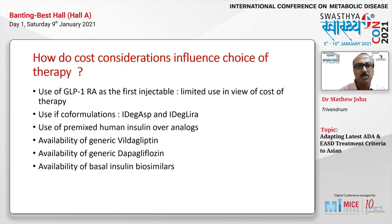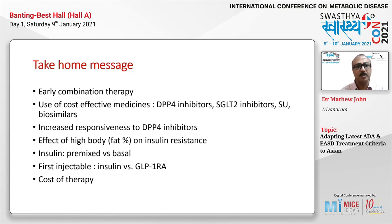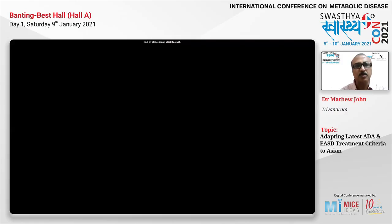Certain insulin formulations like iDegAsp and iDegLira are expensive, and GLP-1 RAs are expensive, but availability of biosimilar premixed insulins and generic vildagliptin and dapagliflozin makes therapy more affordable. Key messages: consider early combination therapy; use cost-effective medicines — DPP-4 inhibitors, SGLT2 inhibitors, sulfonylureas, and biosimilar insulins; account for enhanced DPP-4 inhibitor responsiveness in Asians; for insulin-resistance phenotypes consider SGLT2 inhibitors and GLP-1 RAs; use premixed over basal insulin when postprandial glucose is high; and choose the first injectable — insulin versus GLP-1 RA — based on insulin deficiency versus insulin resistance phenotype, always considering cost. Thank you.